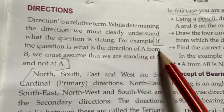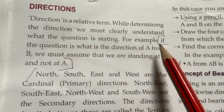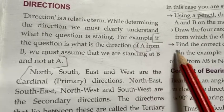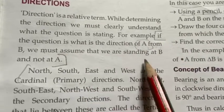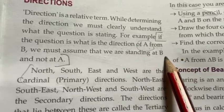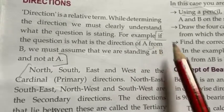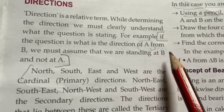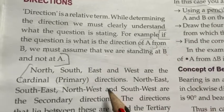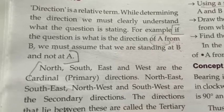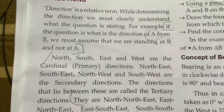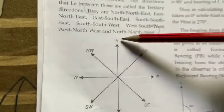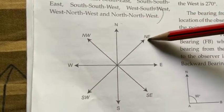If we ask what is the direction of A from B, that means we assume that we are standing at B and looking towards A. The direction of A is to be identified from point B. The location and direction of A could be North, North-East, East, South, South-West, West, or North-West.